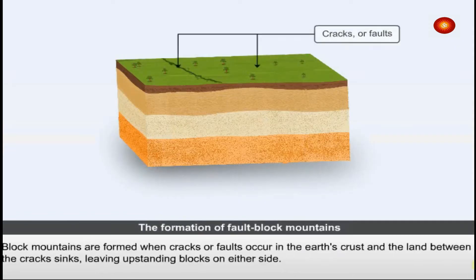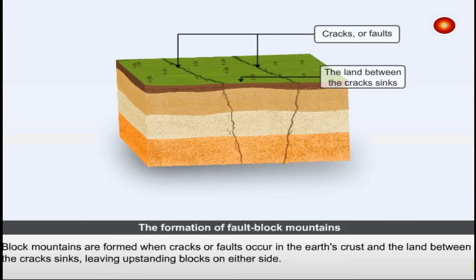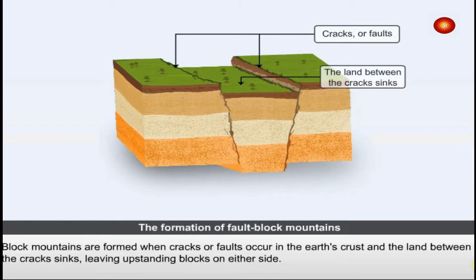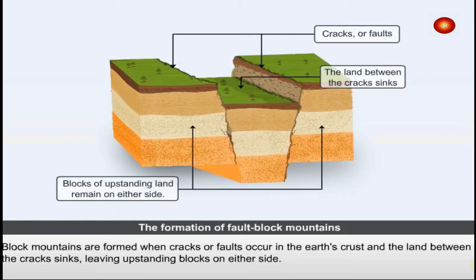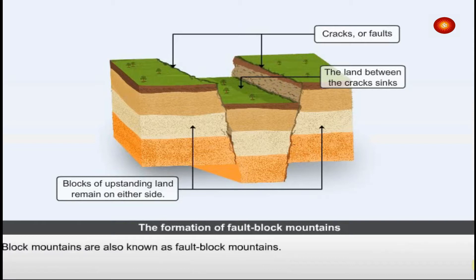Block mountains are formed when cracks or faults occur in the earth's crust and the land between the cracks sinks, leaving upstanding blocks on either side. Block mountains are also known as fault block mountains.